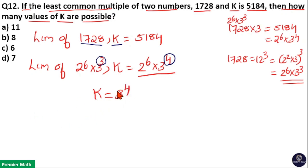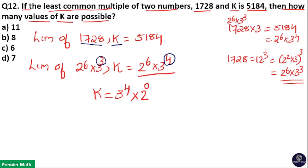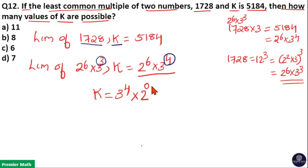That is, the highest power of 3 in K is equal to 4. The other factor of K can be a power of 2. The power of 2 in K can be either 0 or maximum up to 6. That is, the factor of 2 in K can be 2 raised to 0, or 2 raised to 1, or 2 raised to 2, and so on up to 2 raised to 6. So total values of the power of 2 possible for K range from 0 to 6.